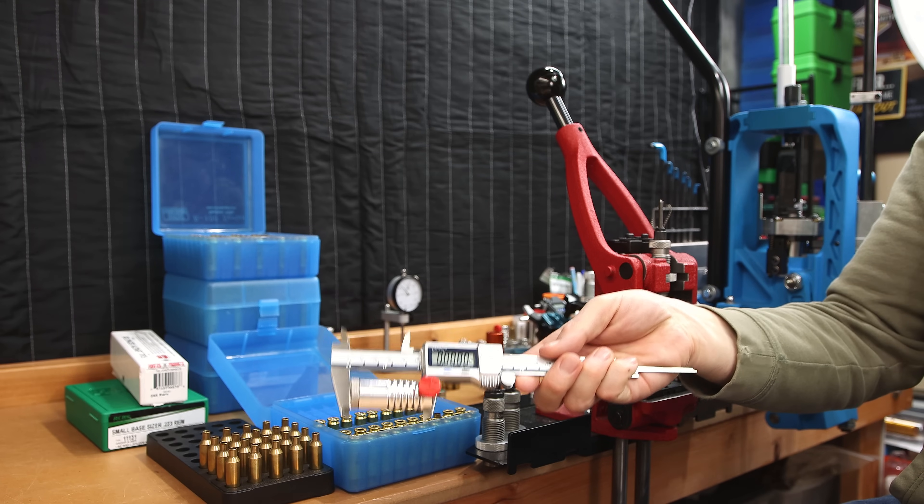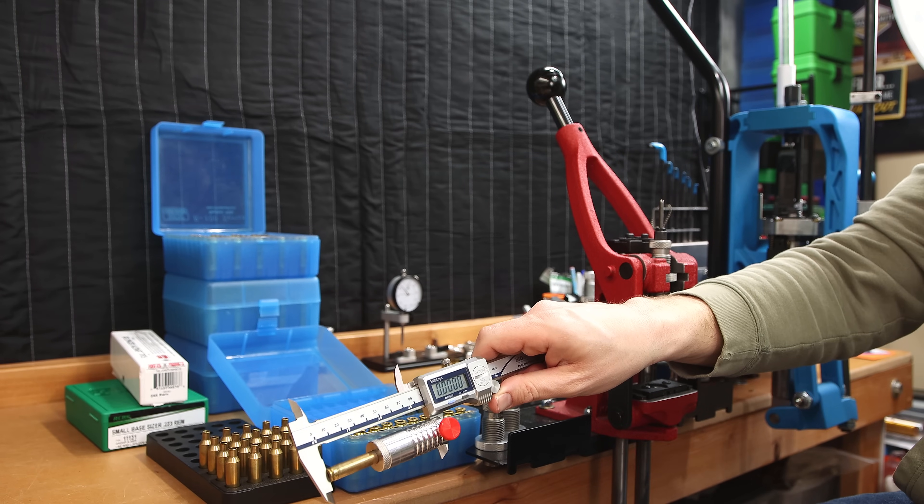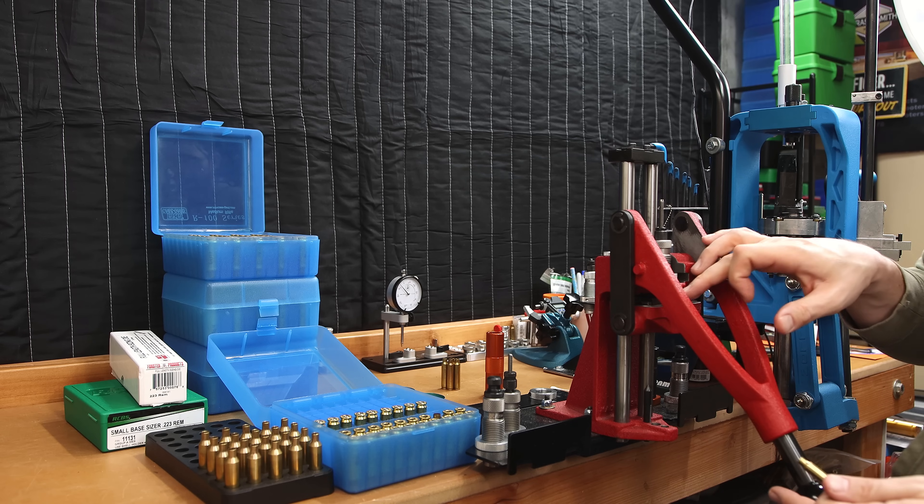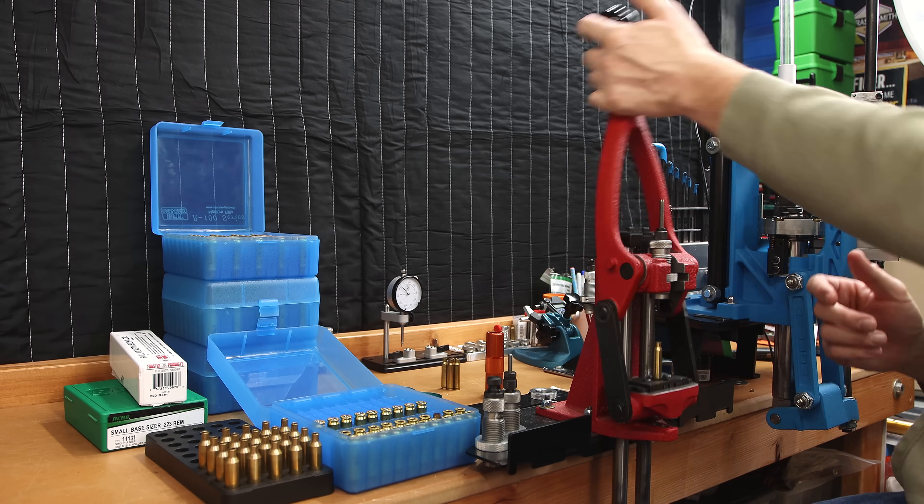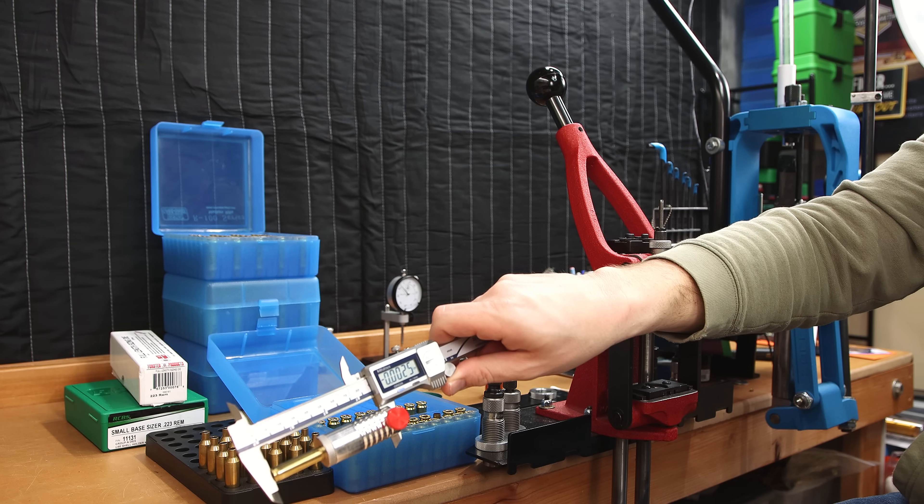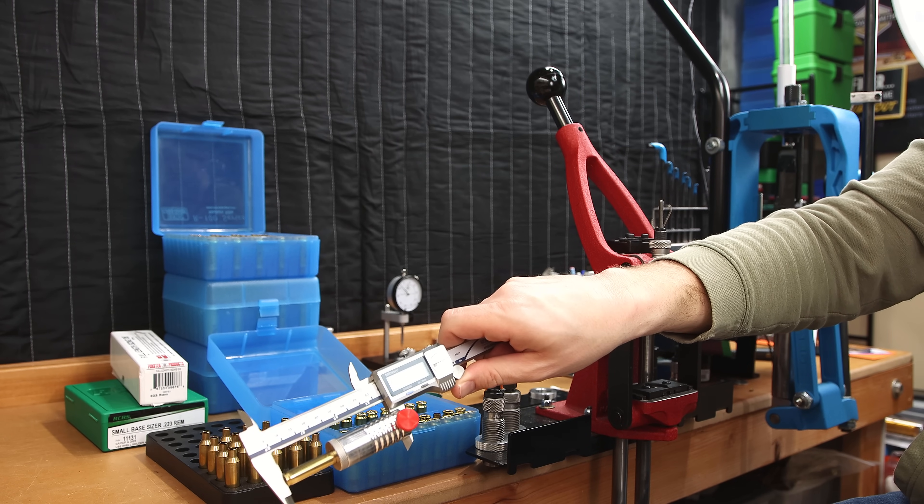Now there's a fun trick. We can take our calipers, we can zero our tool on a fired piece of brass, set our die for contact, size our piece of brass, and see that we're very close, two and a half thousandths.